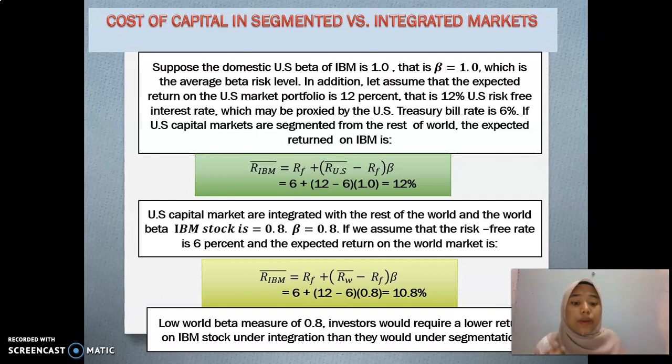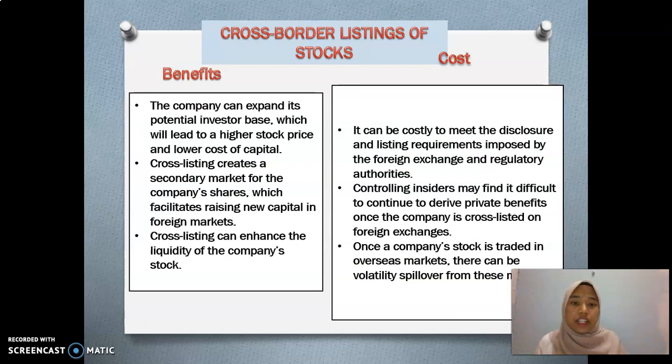So the conclusion here is that a lower beta measure of 0.8 means investors require a lower return on IBM stock under integration than they would under segmentation.